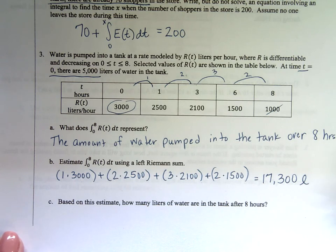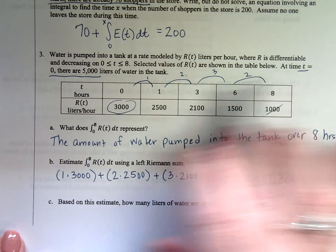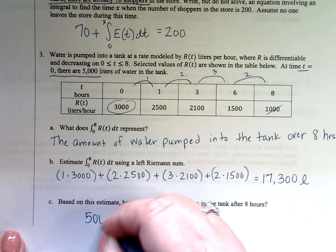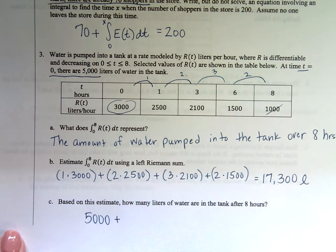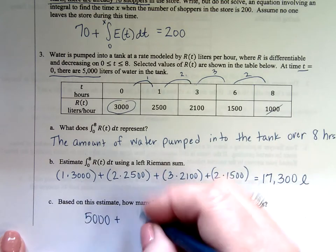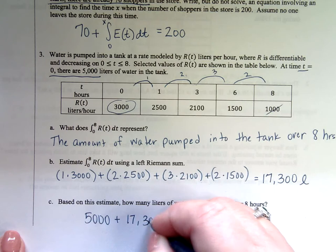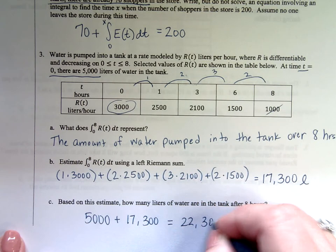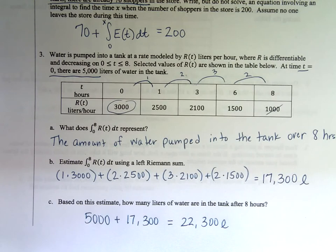Based on this estimate, how many liters of water are in the tank after eight hours? It started with 5,000, and then water's being pumped into the tank. After eight hours, that's my 17,300 number. When I add them up, I get 22,300 liters.